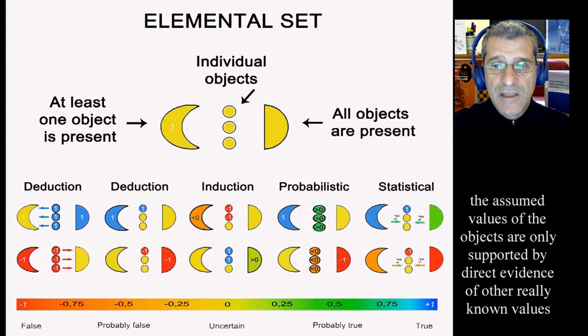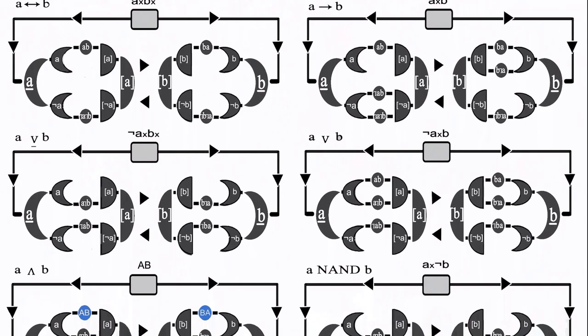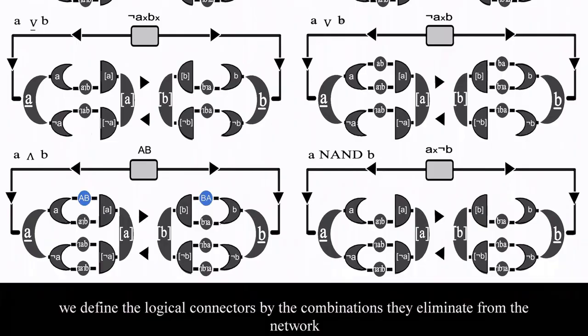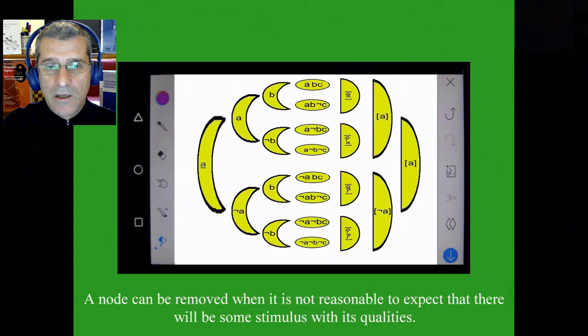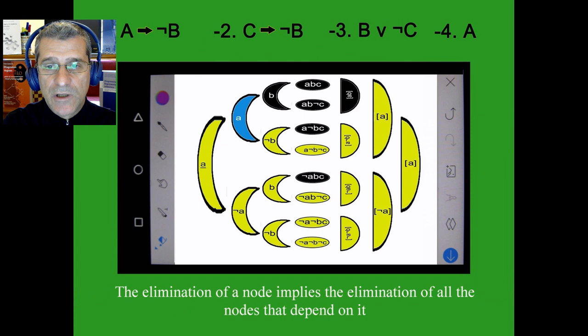Following the tradition of mathematical logic except for the conjunction, we define the logical connectors by the combinations they eliminate from the network. A node can be removed when it is not reasonable to expect that there will be some stimulus with its qualities. The elimination of a node implies the elimination of all the nodes that depend on it.